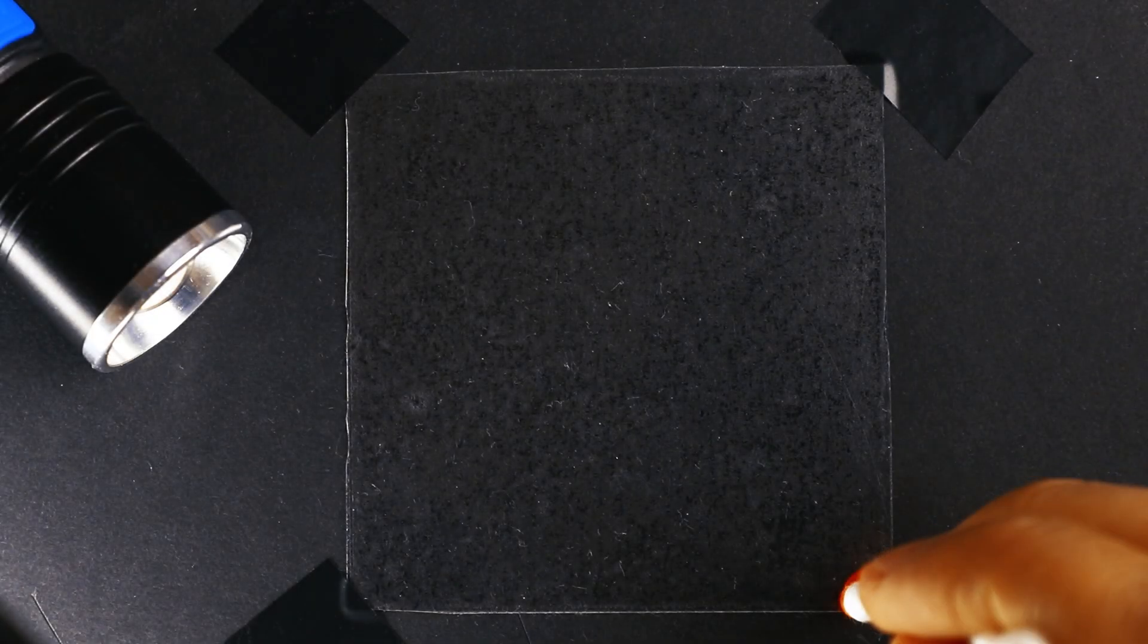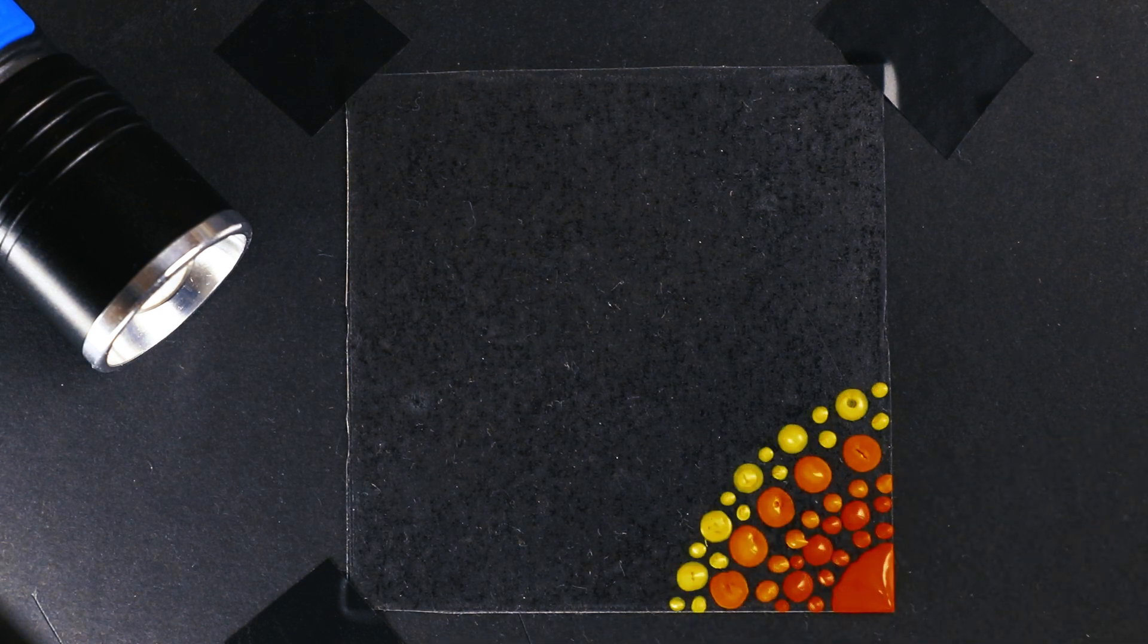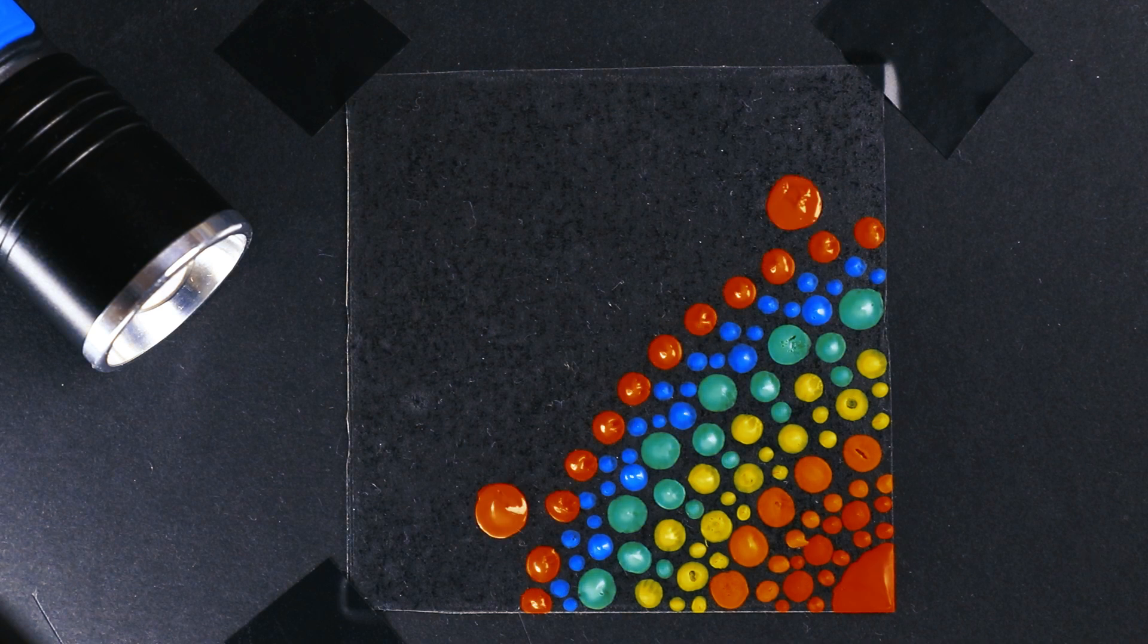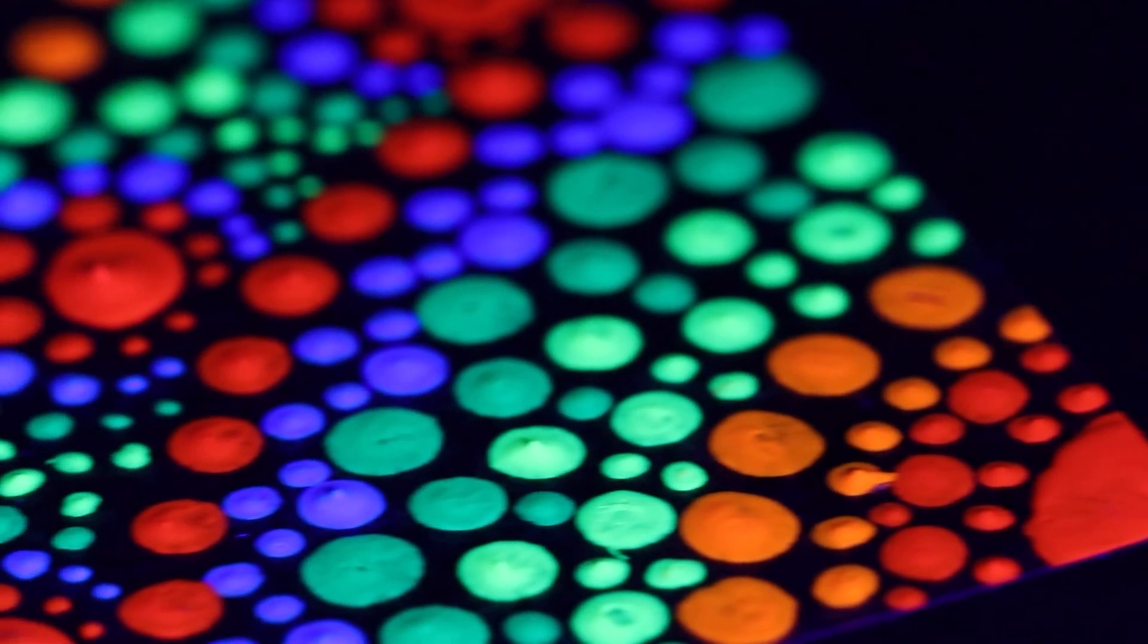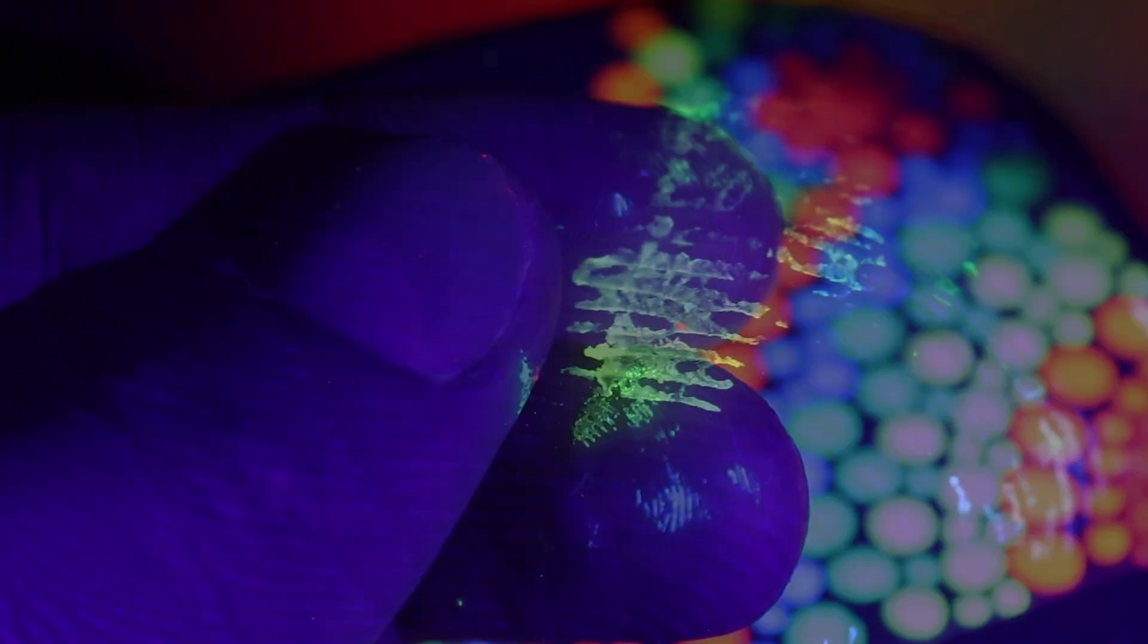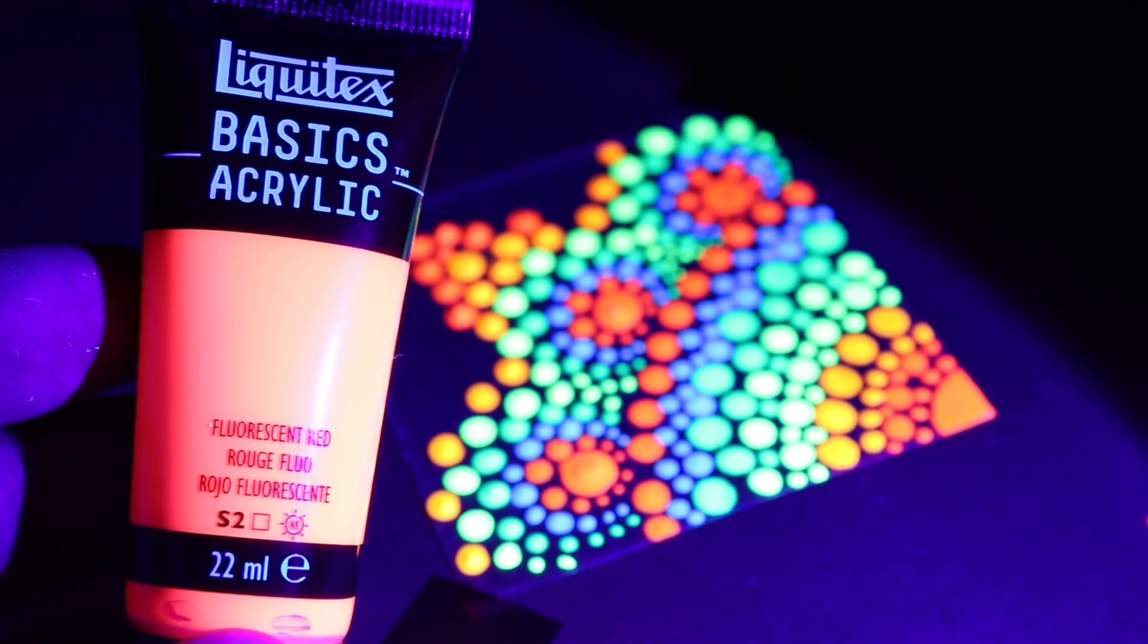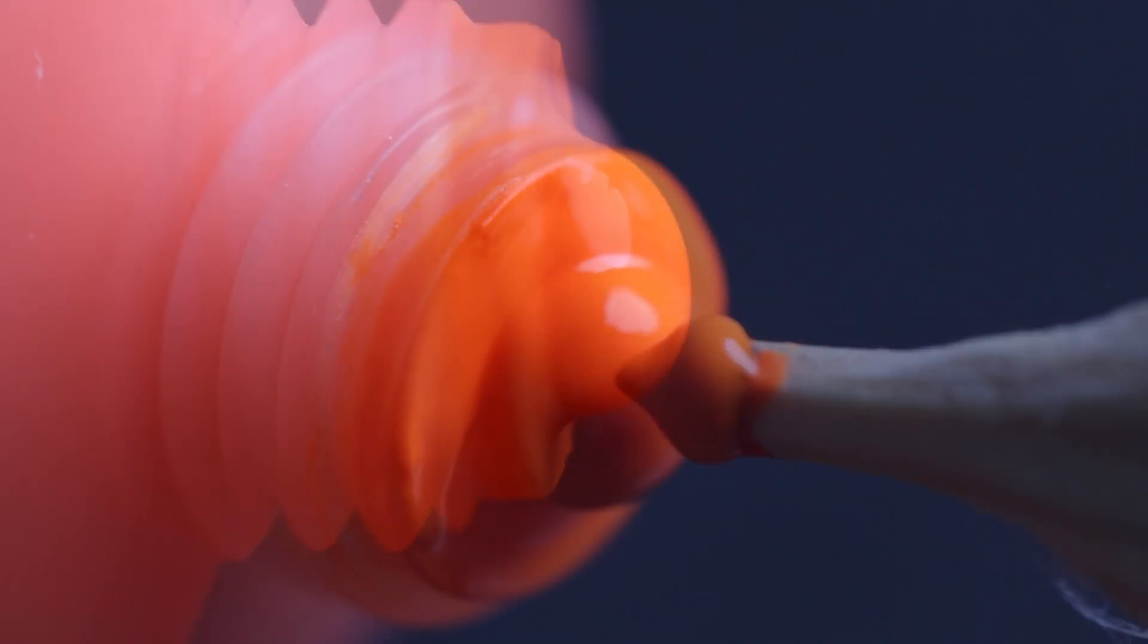I started by simply drawing the image I intended to use. By the way, the paint I'm using is Liquitex fluorescent paint, which I believe is a French brand. It glows really nicely under UV light and is pretty dense.